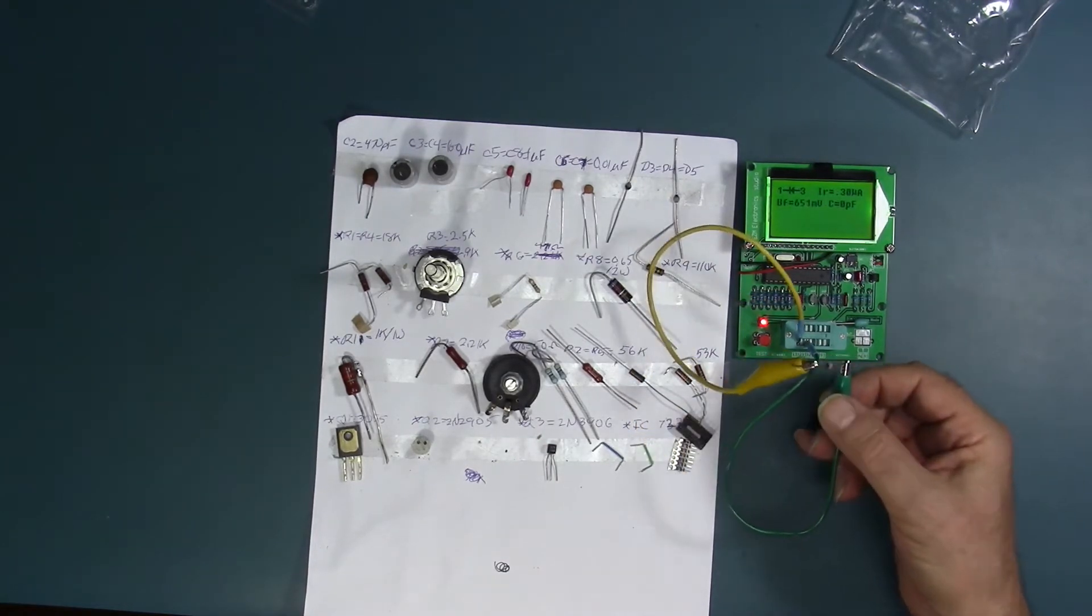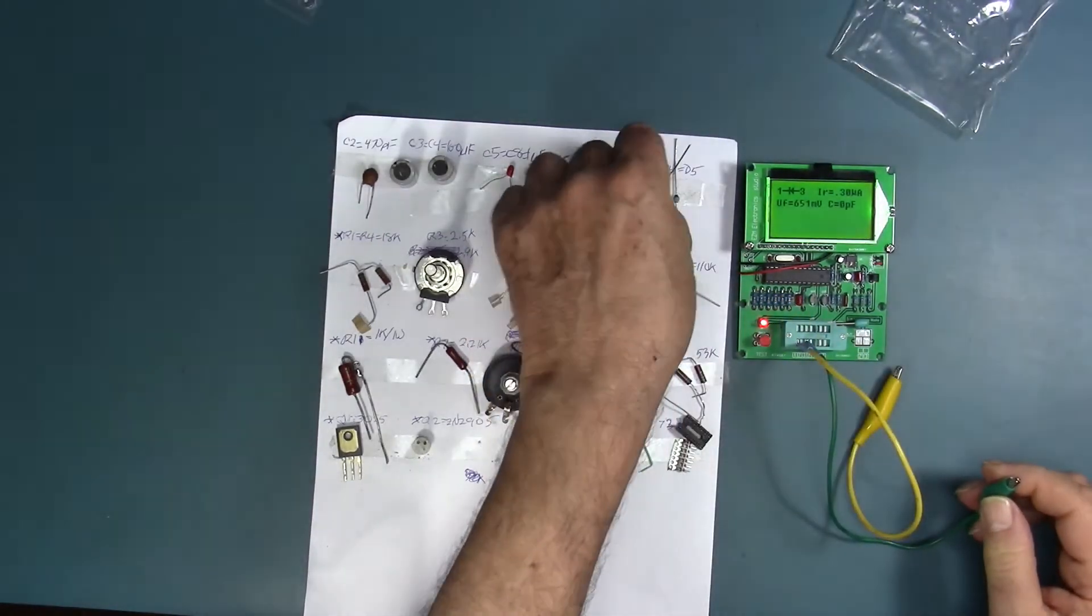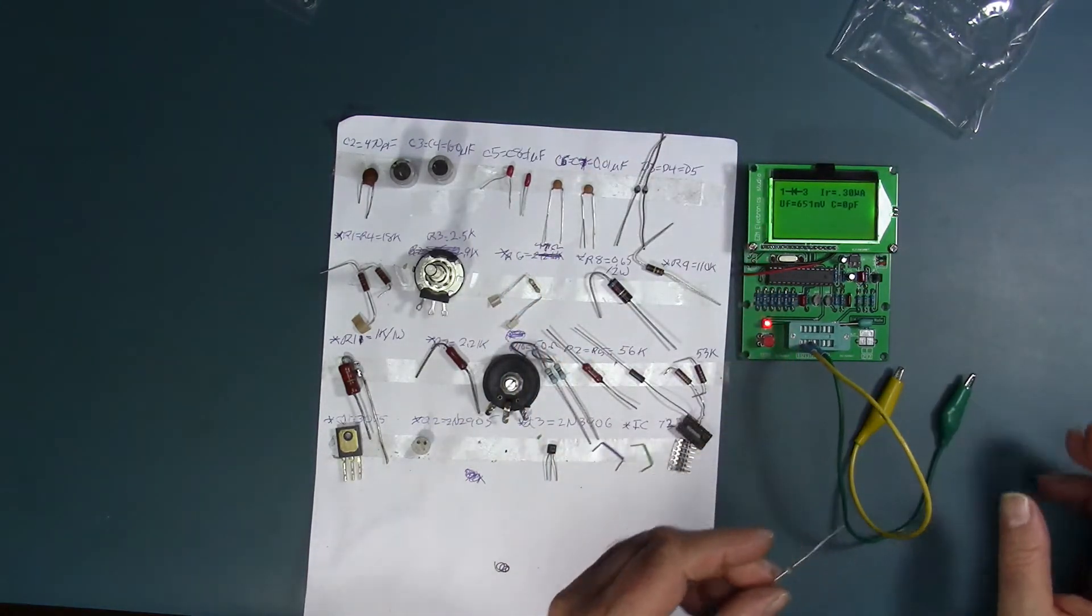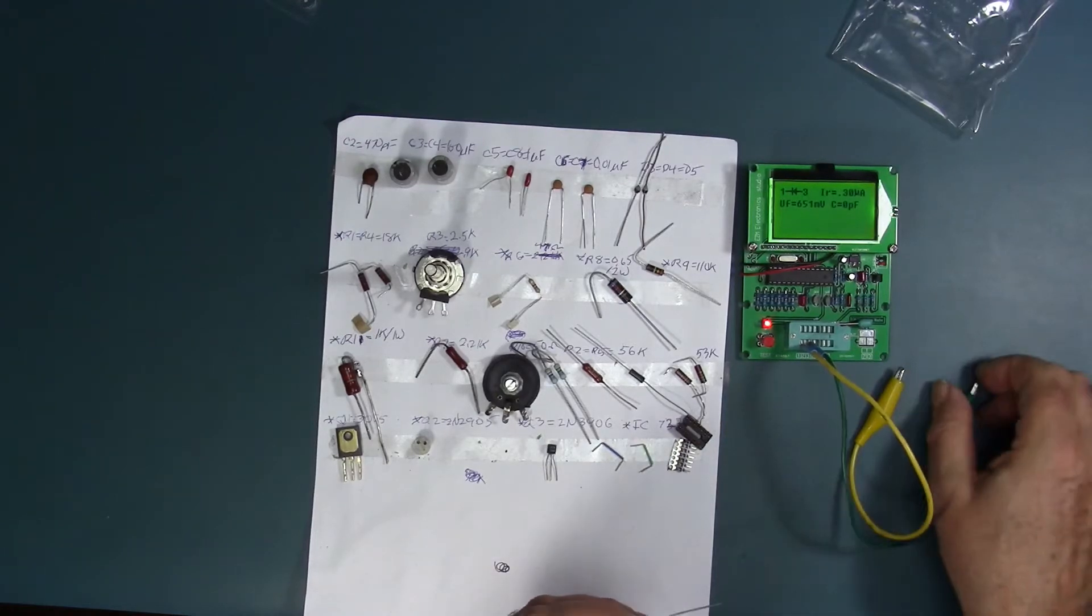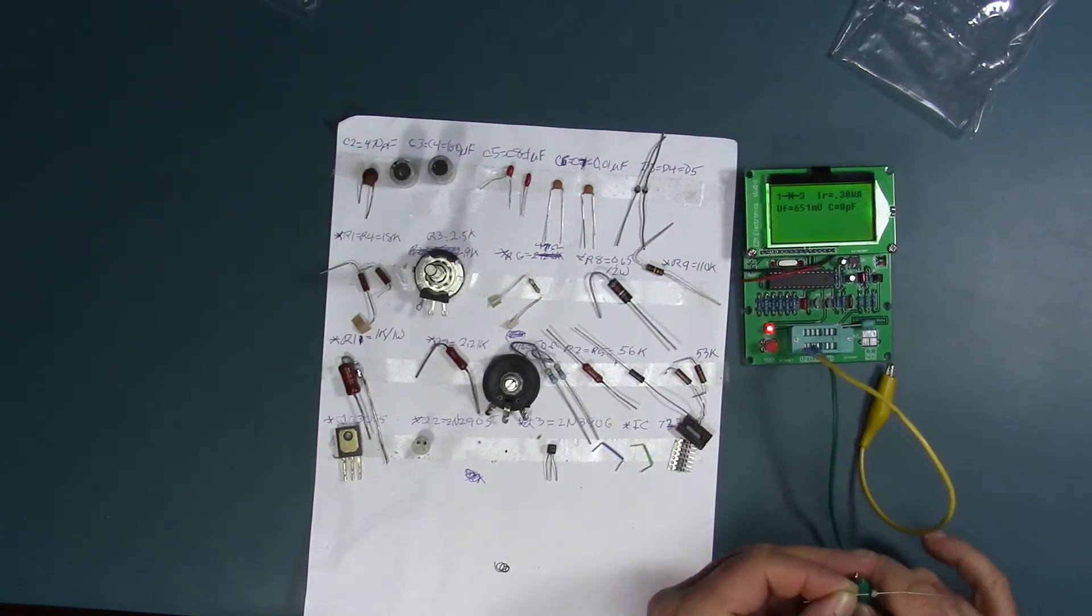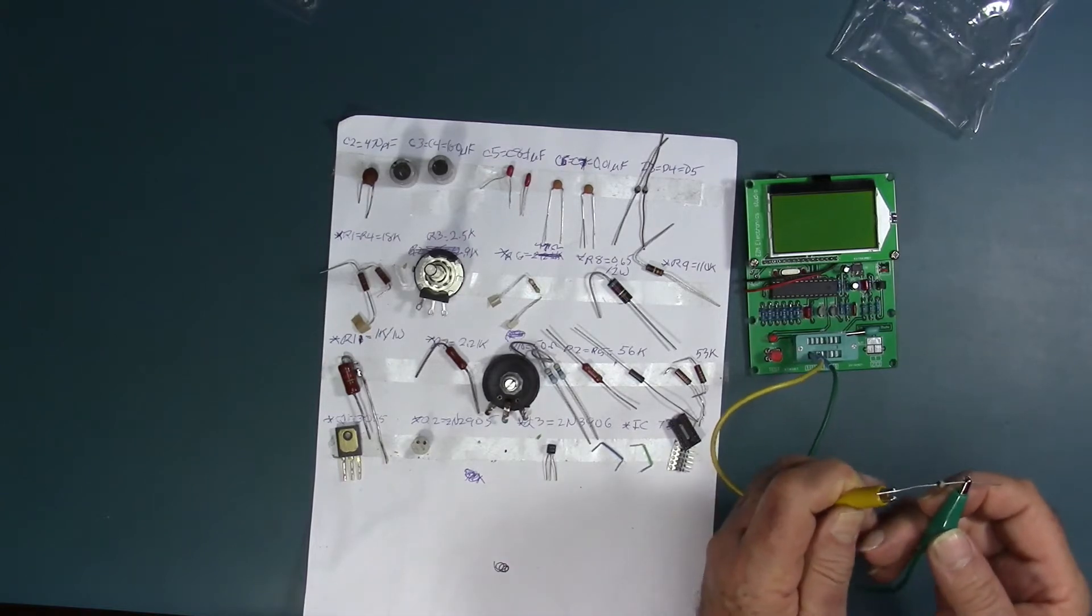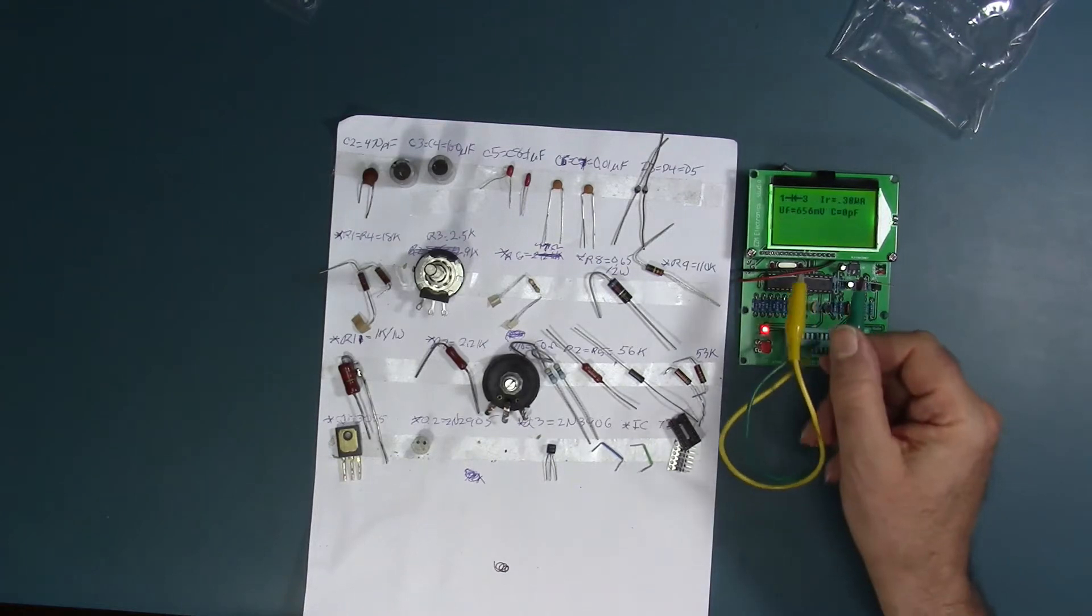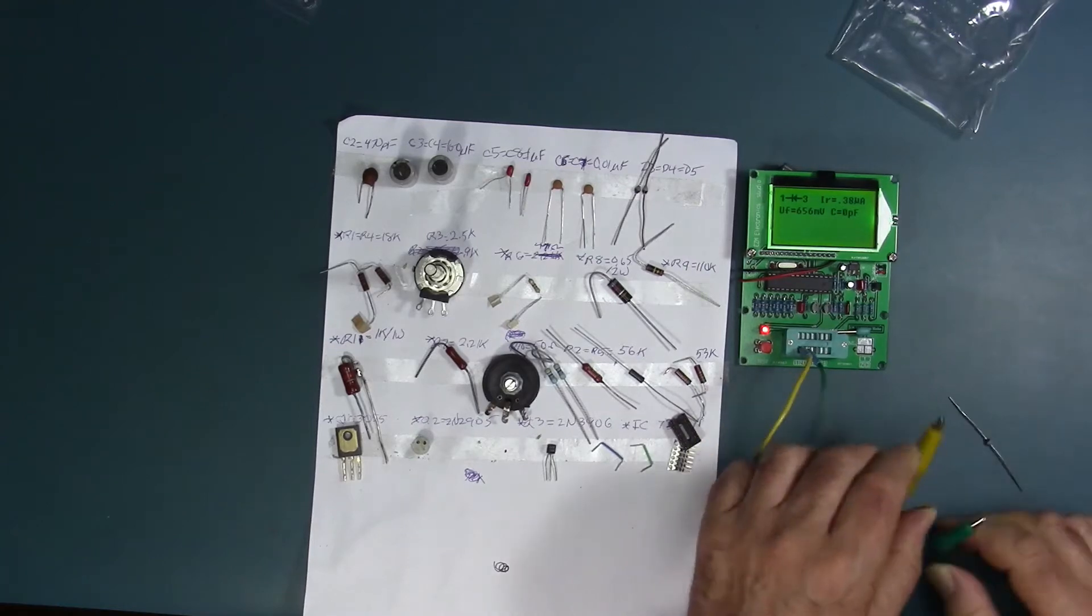And the second diode, again correctly labeled. Finally, the third diode. This is one of my concerns, that I had one of these diodes connected incorrectly, and apparently not. They were properly labeled and properly connected. The forward voltage is 6.56.